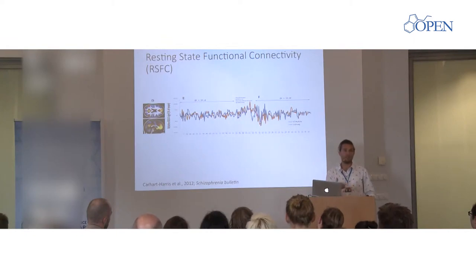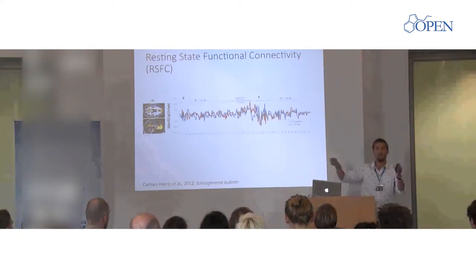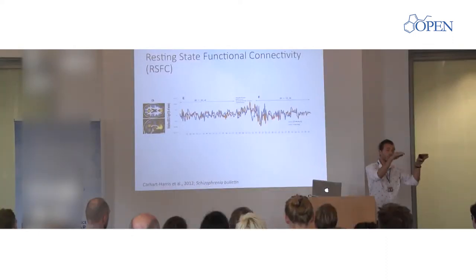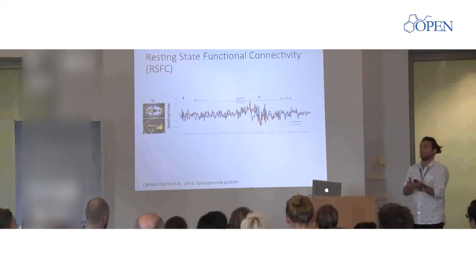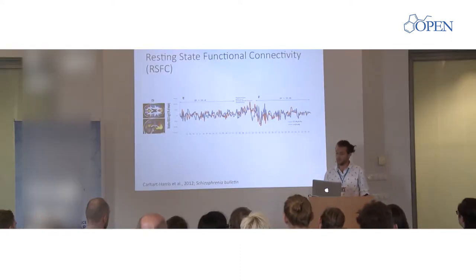Resting state functional connectivity looks at how the visual network is connected to different areas. Functional connectivity means co-activation: you take two areas, take the BOLD activations from an eight-minute scan with a frame every two seconds, and you get a time course. If two time courses move together, we call it resting state functional connectivity — increased functional connectivity. That's an example here of two areas or networks that are co-activated. So we can take an area — in this case the primary visual cortex — and see which other areas are activated at the same time.